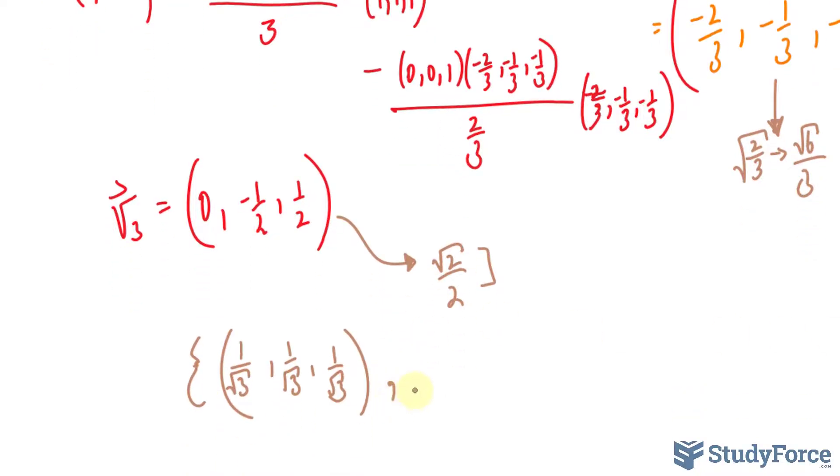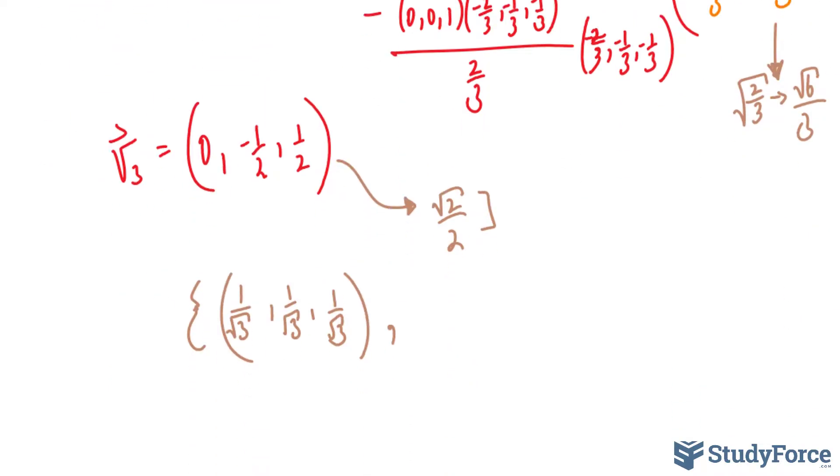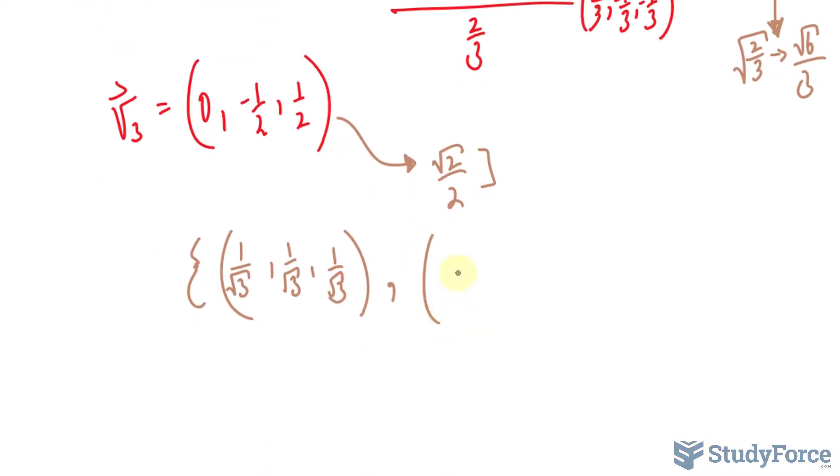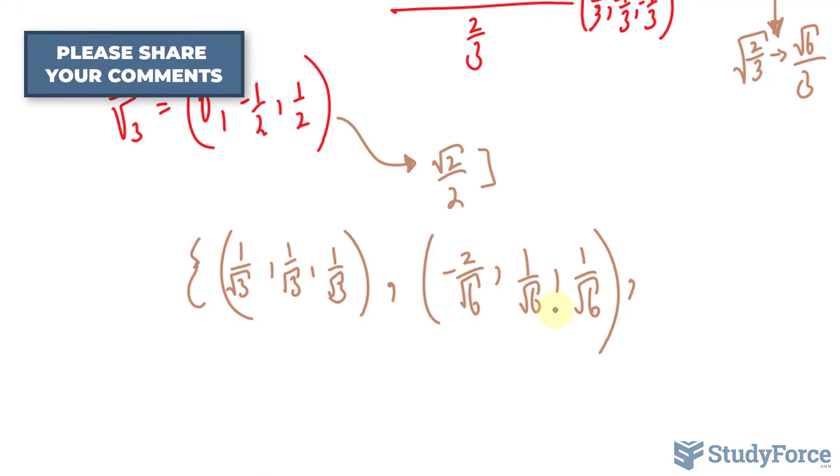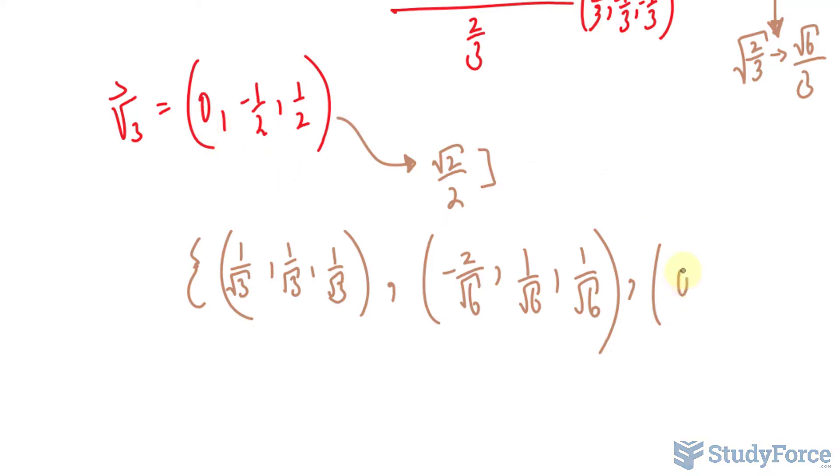And then, when we divide each of these by the square root of 6 over 3, we'll end up with negative 2 over the square root of 6, 1 over the square root of 6, and 1 over the square root of 6. And doing the same thing here. And by the way, if you don't like the fact that we have square roots at the bottom, you can rationalize each of these components. It's the same thing. And lastly, for over here, we get 0, negative 1 over the square root of 2, and 1 over the square root of 2.